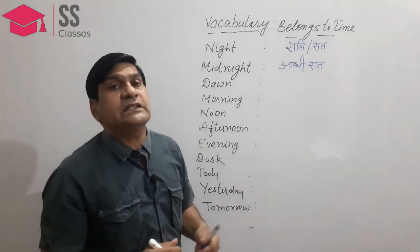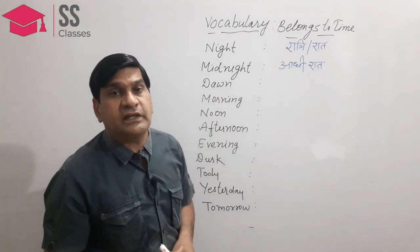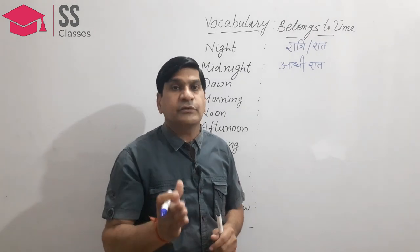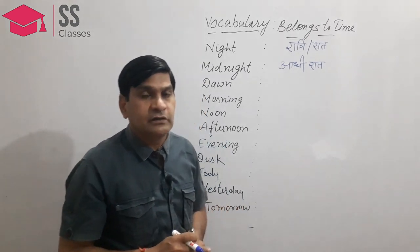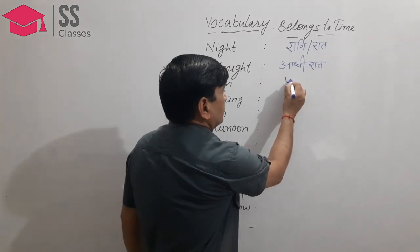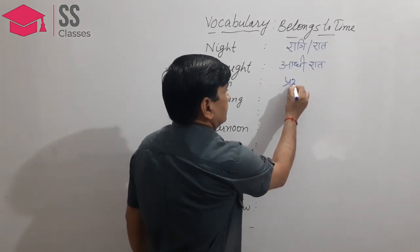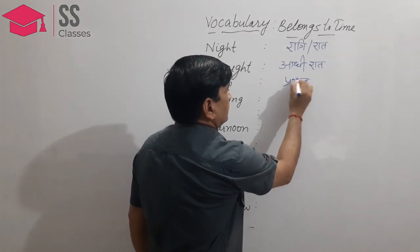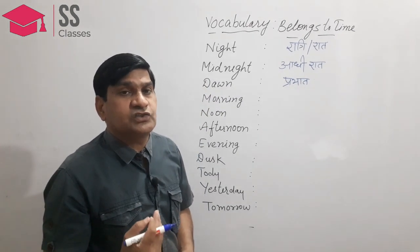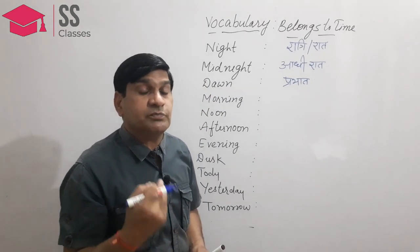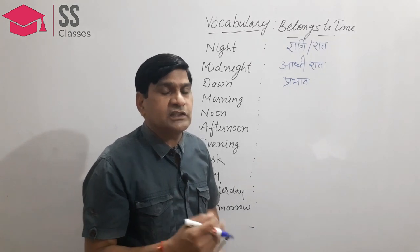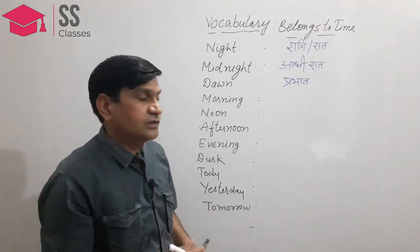Dawn — yeh ek aisa samay hai. It is the time just before the morning — prabhat ka samay. It is just the time just before the rising sun. Morning se thoda pahle ka samay — that is called dawn, or prabhat.